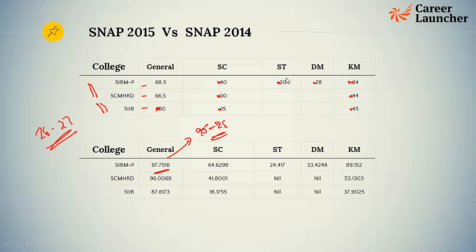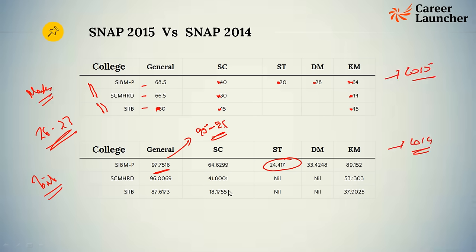Category students should really go all out, because the cutoff for SIBM Pune for ST students is very low — just about 24 percentile. In 2014, the percentile and marks were very close: 97 percentile was roughly 95 to 96 marks, and 24 percentile was roughly 30 to 32 marks, which also went down to about 20 in 2015. Category students should look at maximizing attempts — the cutoff is not very high, so they have a very good chance.